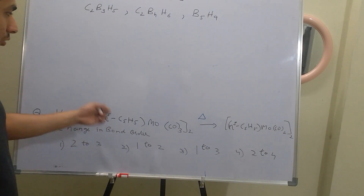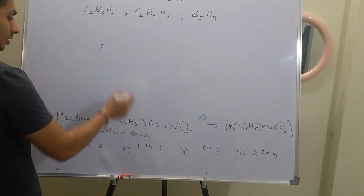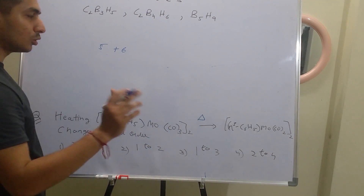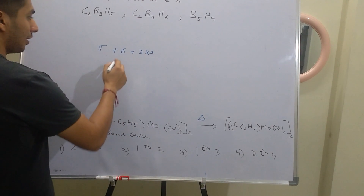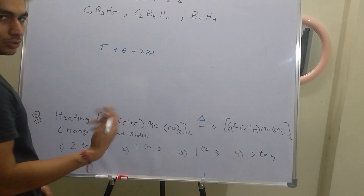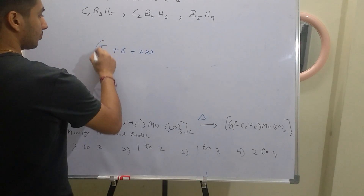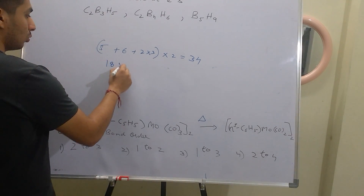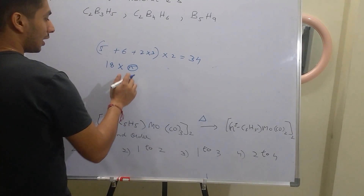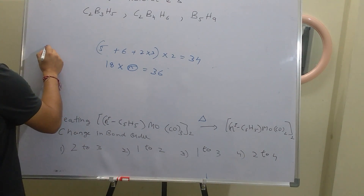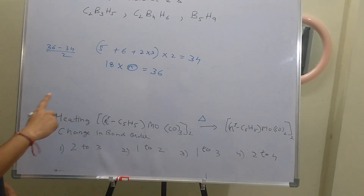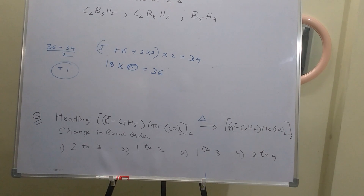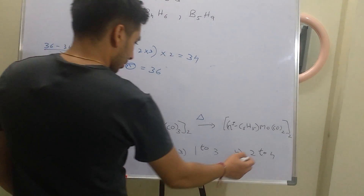For [η5-C5H5-Mo(CO)3]2: η5-C5H5 contributes 5 electrons, Mo contributes 6 electrons, and 3 CO × 2 electrons = 6 electrons, giving 5 + 6 + 6 = 17 per unit. As a dimer, total = 17 × 2 = 34 electrons. Using the formula: 18N − total electrons / 2, with N = 2 metals: (36 − 34) / 2 = 1. Bond order = 1. This eliminates two options, leaving 1→2 or 1→3.